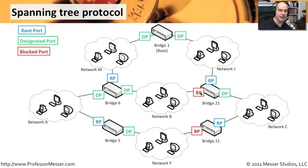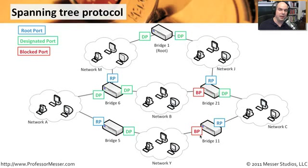If you need to get from bridge 21 on network C to network B, you're going to have to go all the way back out to the root bridge and back down again to get to network B, because the ports on bridge 21 and bridge 11 are blocked. This is great — everybody knows about each other, they keep track of each other, and messages are sent very often between these bridges.